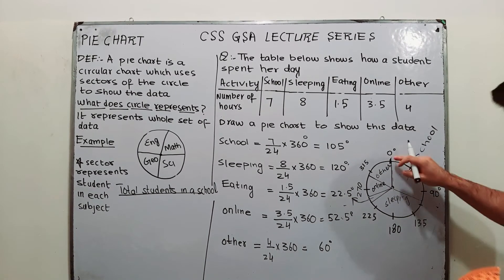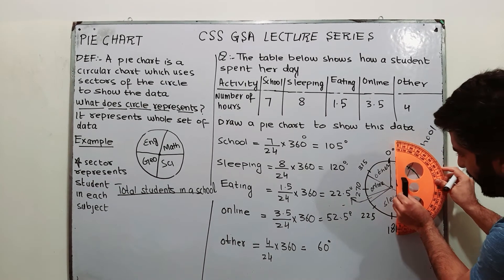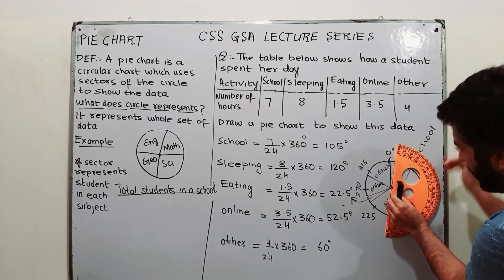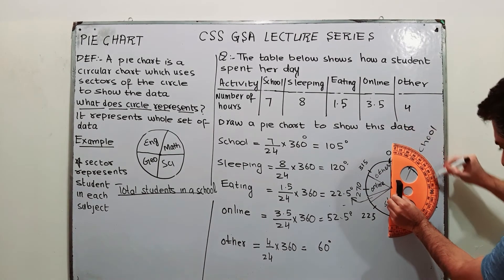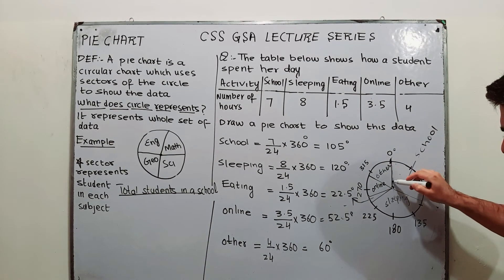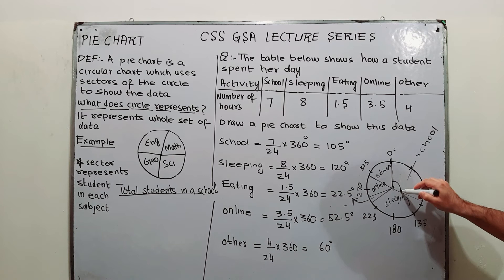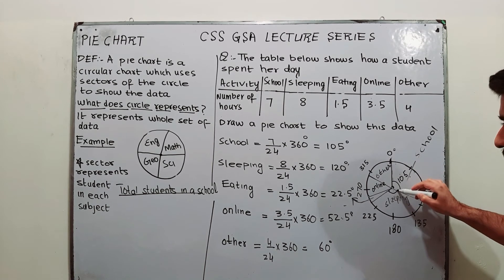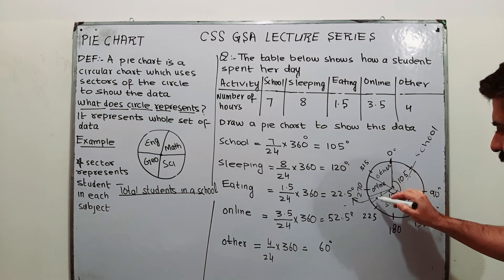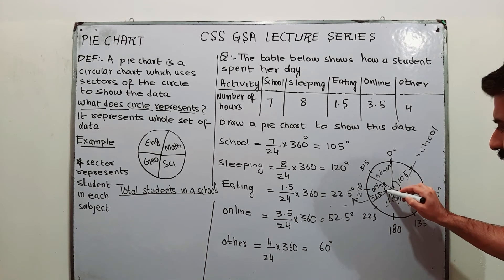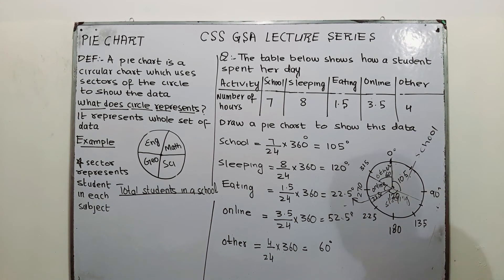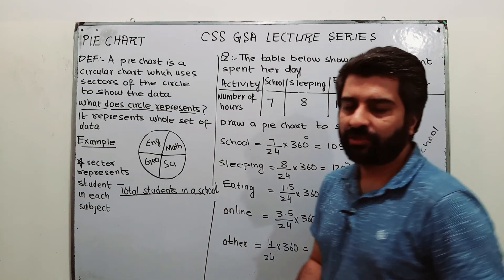To summarize the construction: start from a line, place your protractor with its center at the center of the circle, and count from 0 to the required angle. This is the completed pie chart — school is 105 degrees, sleeping is 120 degrees, eating is 22.5 degrees, online is 52.5 degrees, and others is 60 degrees. In this way, you can construct your pie chart.